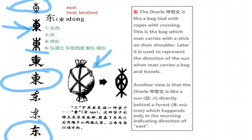What does that mean? How does that relate to 东, East? Some people say that it represents a person travelling in the direction of the sun. That's one explanation — the direction of the sun is East.